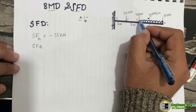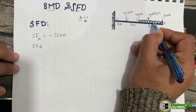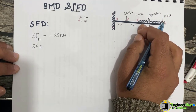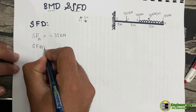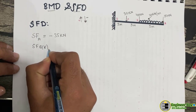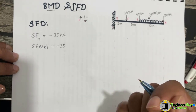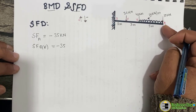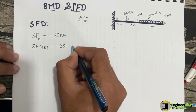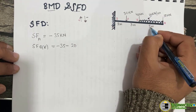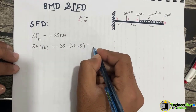The shear force at point B can be taken from the right-hand side. At the right-hand side of point B we have a UDL (uniformly distributed load) of 20 kilonewtons per meter. So we take point B right-hand side: that is minus 35, plus the UDL which is 20 kilonewtons per meter times the distance of 5 meters.